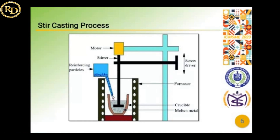Then there is the stir casting process. In this process, molten aluminum is kept in a bucket and a reinforcing particle is poured in an adequate ratio, which is stirred regularly at 200 to 400 RPM with the help of a stirrer and a motor.